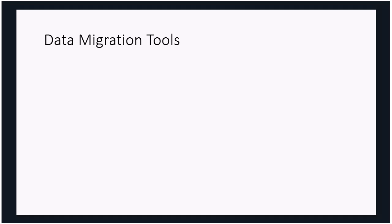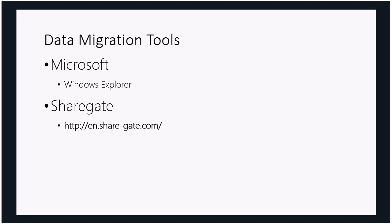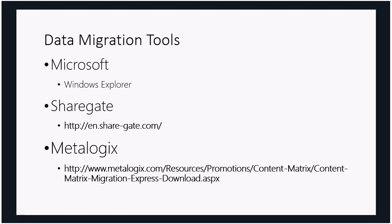For data migration tools: Microsoft's easiest migration tool is Windows Explorer — you can open it and copy-paste from the file system into SharePoint or OneDrive. Not recommended but free and workable for small amounts of data. A common third-party tool is Sharegate, which allows migration from on-premise file shares or other SharePoint environments into Office 365, and can manage permissions. Another tool is Metalogix, which has an express version offering 25 GB free at a time for migrating from file shares or SharePoint to Office 365. Sharegate is a full commercial product requiring purchase and licensing.